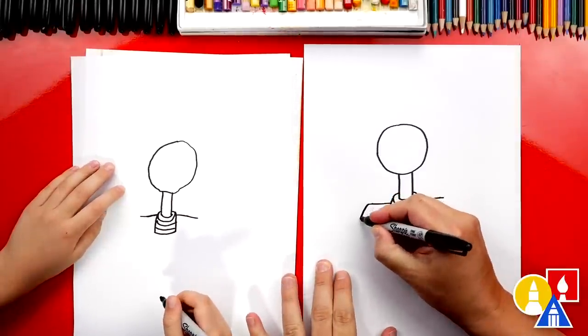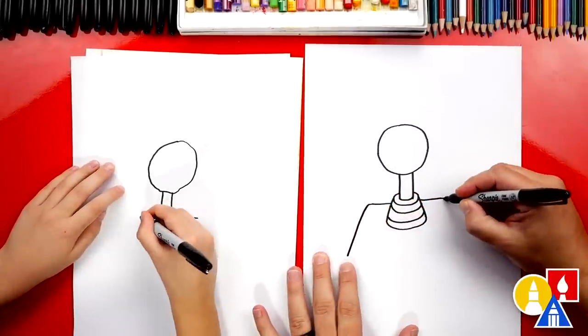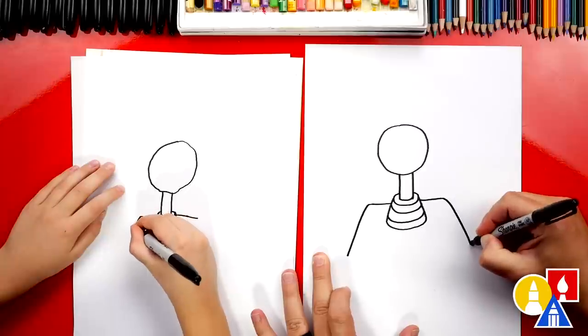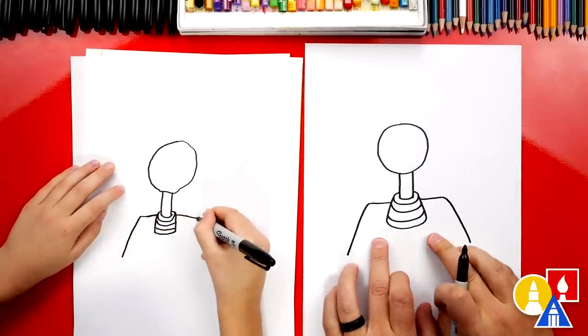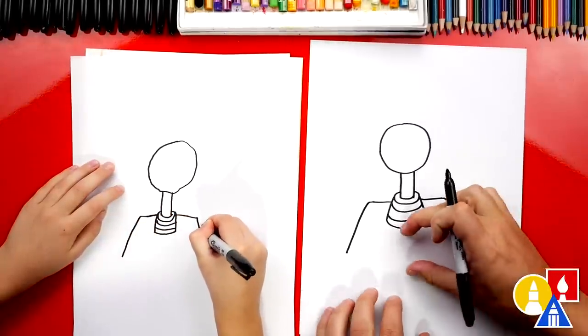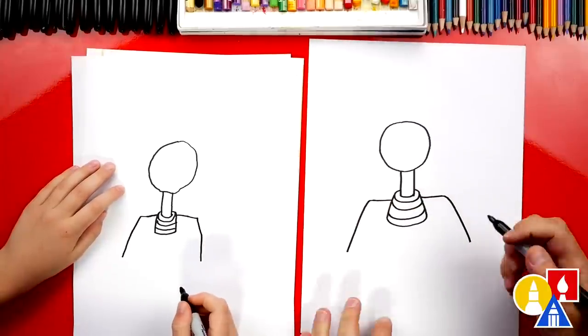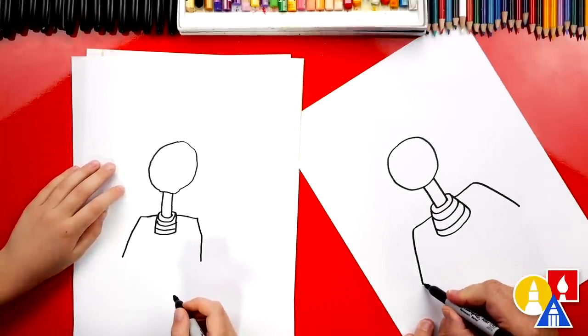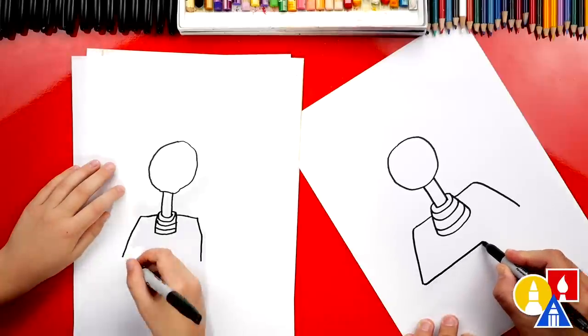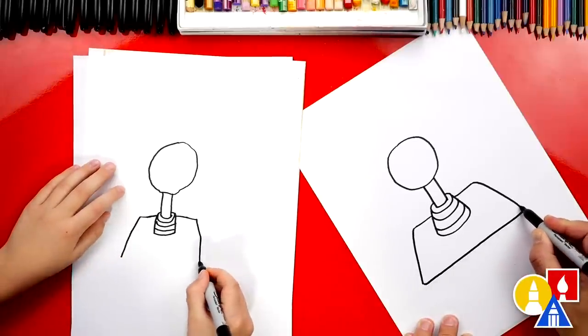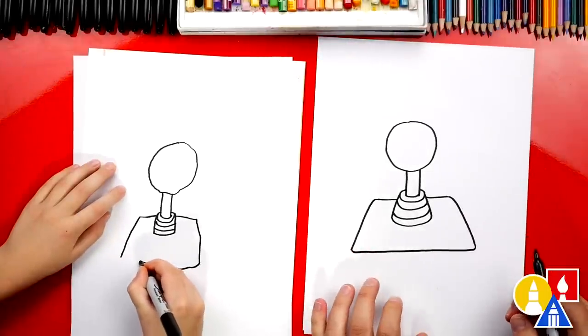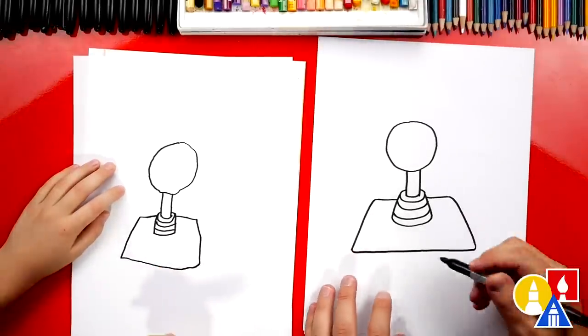Now we're going to draw a diagonal line that comes down on the left and also down over here on the right. We don't want to go too far past the joystick but a little extra space down here because we need another little button. Now we're going to connect these two lines with a horizontal line at the bottom to connect the two diagonal side lines.